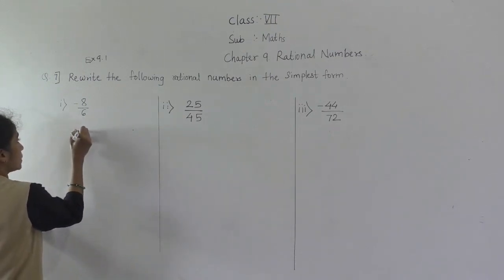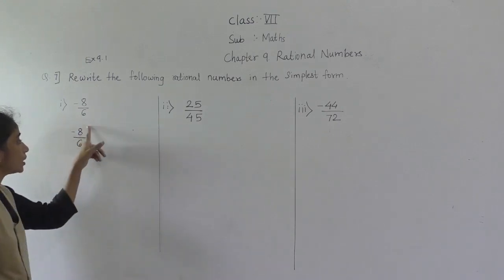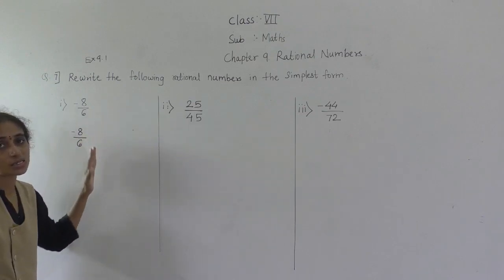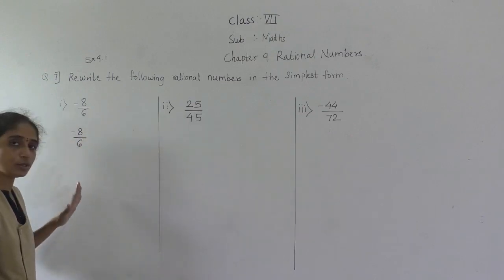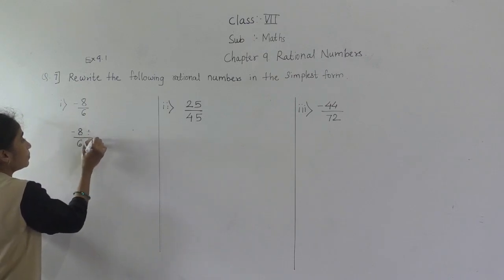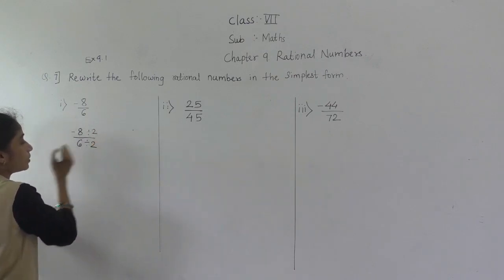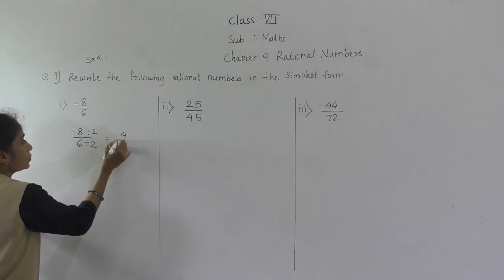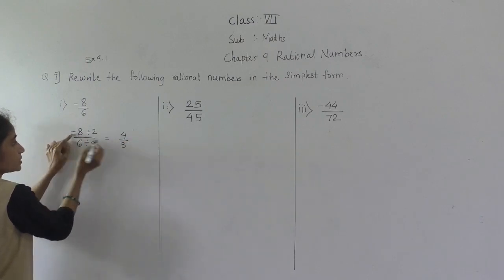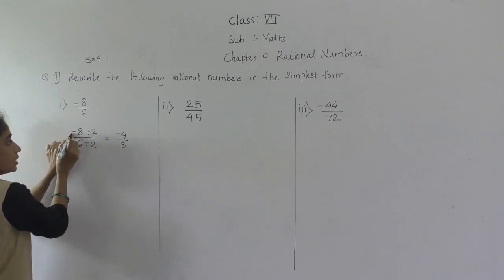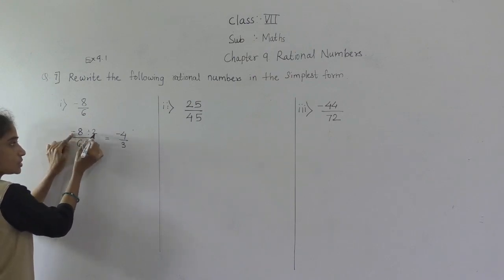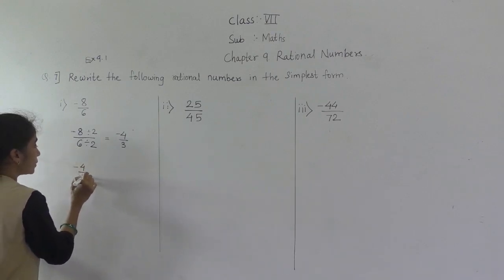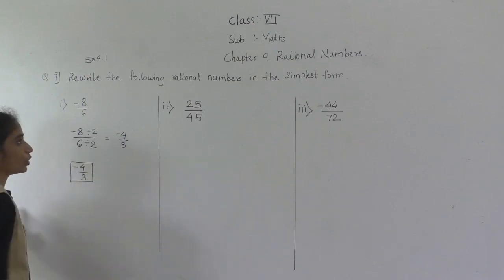First number: minus 8 upon 6. Both come in the 2 table, so divide numerator and denominator by 2. 2 fours are 8, 2 threes are 6. Since one number is negative, the answer is negative: minus 4 upon 3.